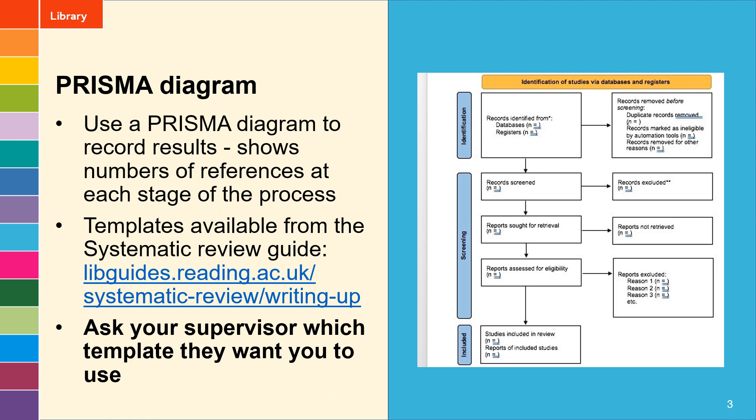Looking at the template on the right in more detail: the top box records the number of references you find from searching on databases, and then the number that were removed by deduplication goes in the box on the right. You can ignore the bit about records marked as ineligible by automation tools because you won't be using those, so it's really just the duplicate records removed you need to include in that box.